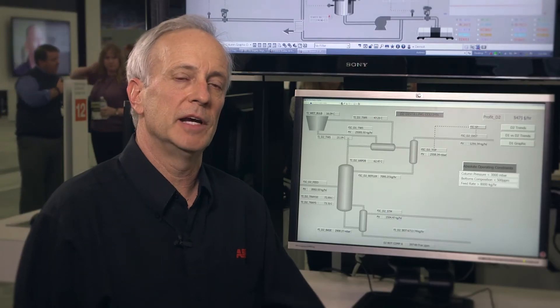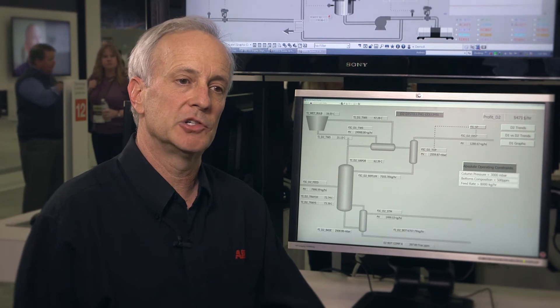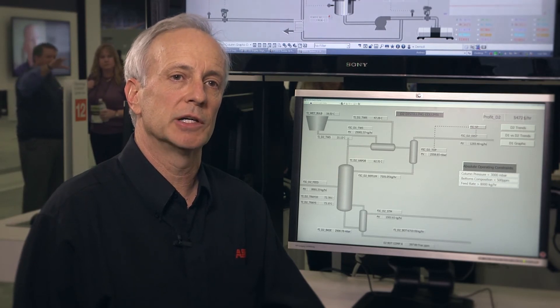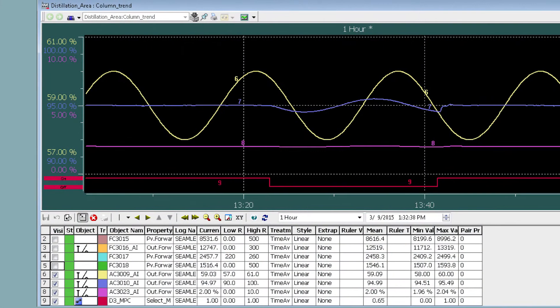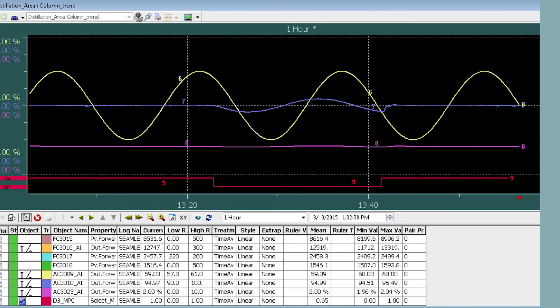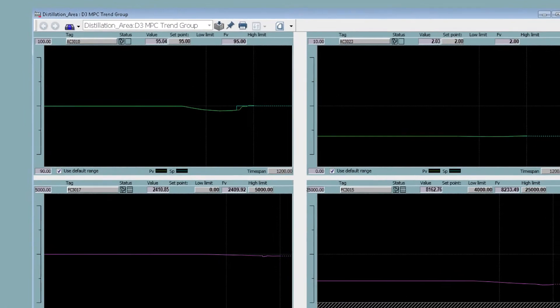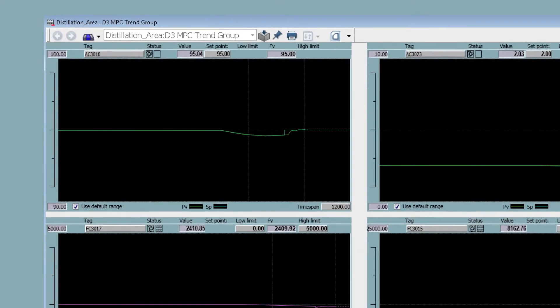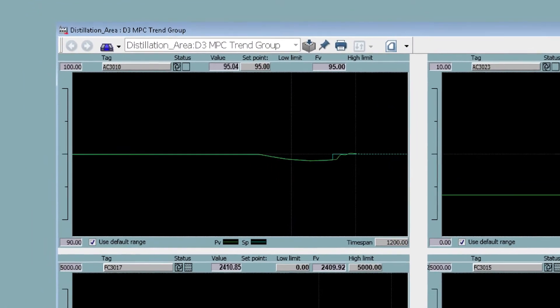The unique part about the 800XA APC package is that we've created object types within the 800XA platform specifically tied to model predictive control, which means that things such as graphical elements, future trends, and things of that nature are automatically included with the offering.